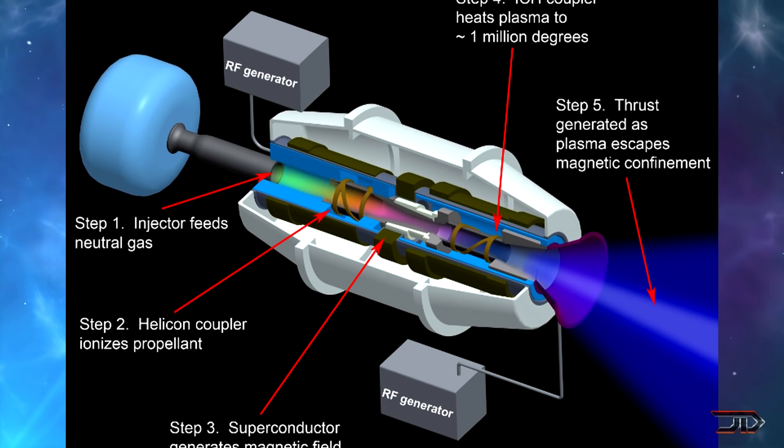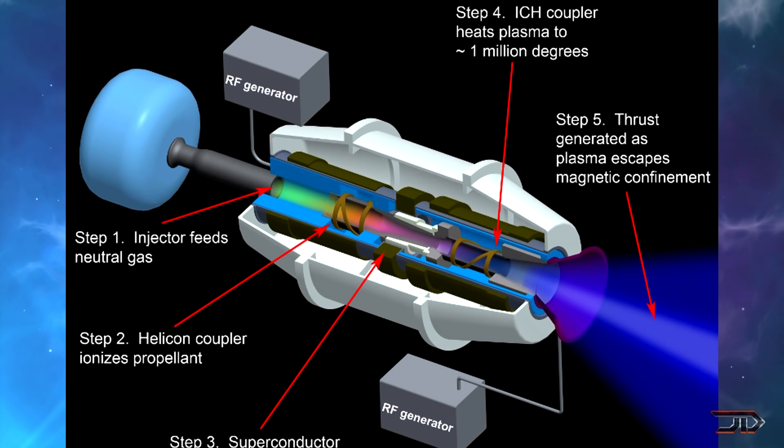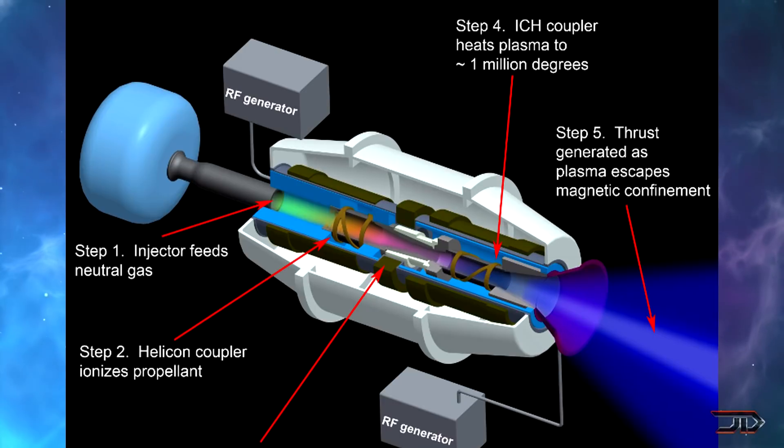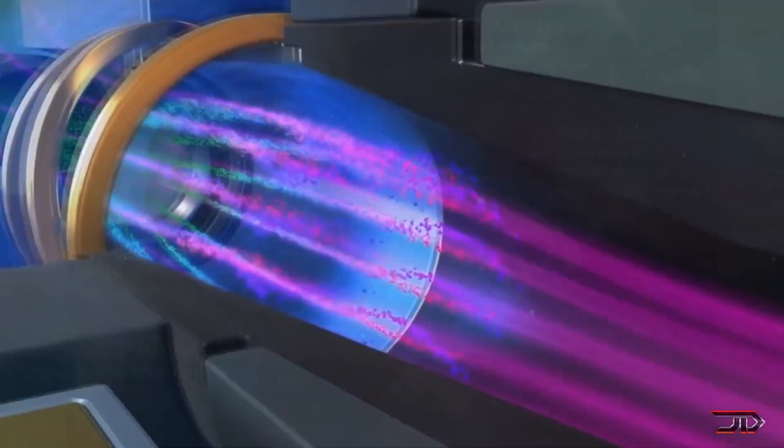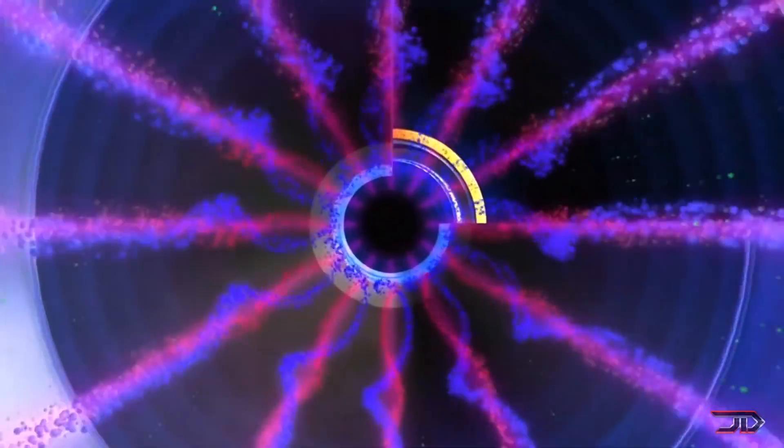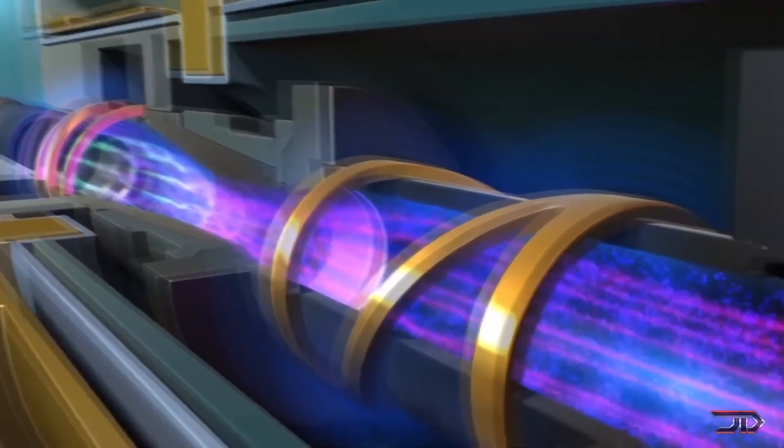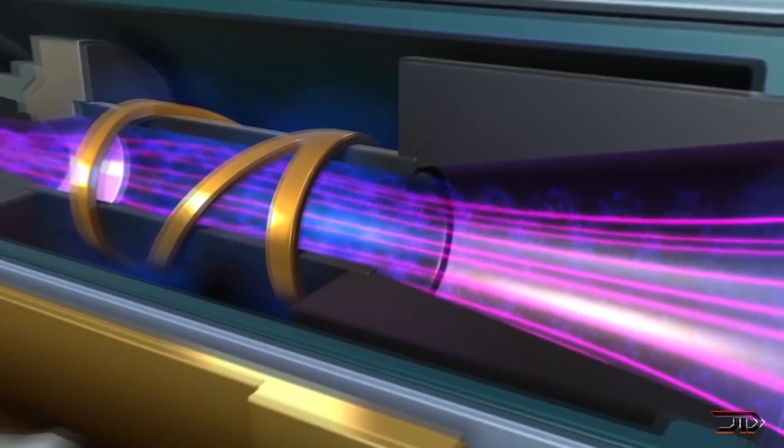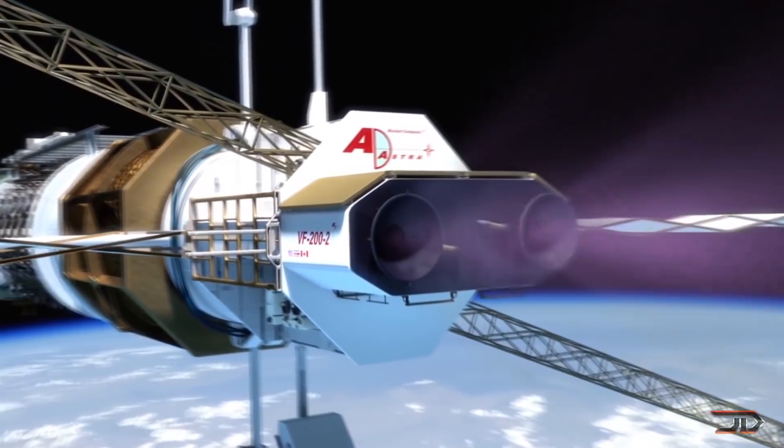But this is not your typical engine, and it works by injecting a gas into a helicon coupler. The gas is then converted into plasma, superheated, and ejected via magnetic nozzle. This gives the Vasmir a specific impulse upwards of 5,000 seconds at 200 kilowatts, which is exponentially higher than a rocket engine.